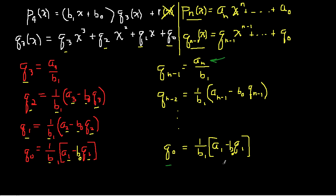Now I can incorporate this pattern into a computer program. Once I've computed q_{n−1}, I use it to compute q_{n−2}, and so on — each result feeding into the next. This is a recursion relation, something I've mentioned before as a pattern that appears repeatedly in mathematics, science, and engineering.